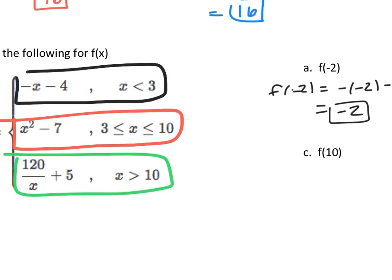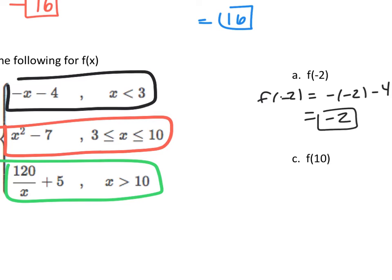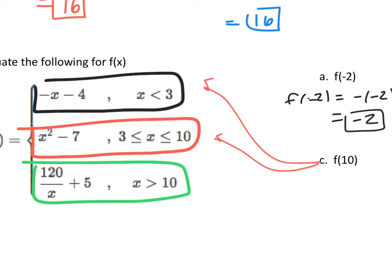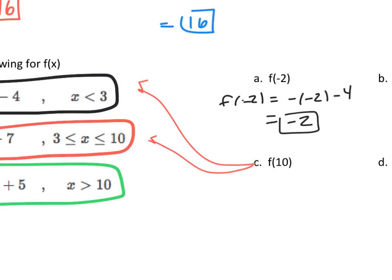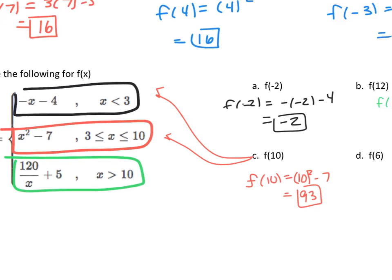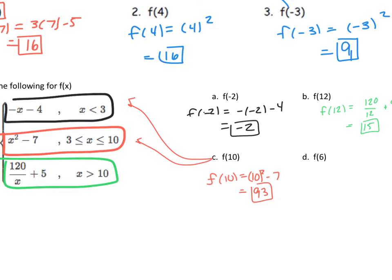Now we're going to go on to part C where we do f(10). We have to ask ourselves, is 10 smaller than 3? Nope. It's larger than 3. Is 10 in between 3 and 10? Yep. So it's going into the piece 2. So when I plug in 10, I'm going to be plugging in as 10 squared minus 7. 10 times 10 is 100. 100 minus 7, 93. Ooh, that's a big number. But guess what? Big numbers are numbers, so they can be correct.